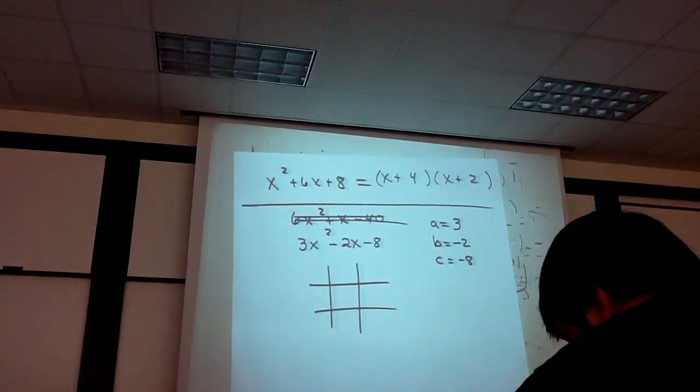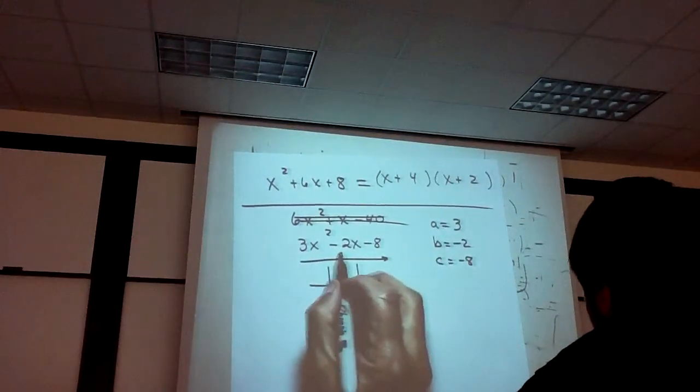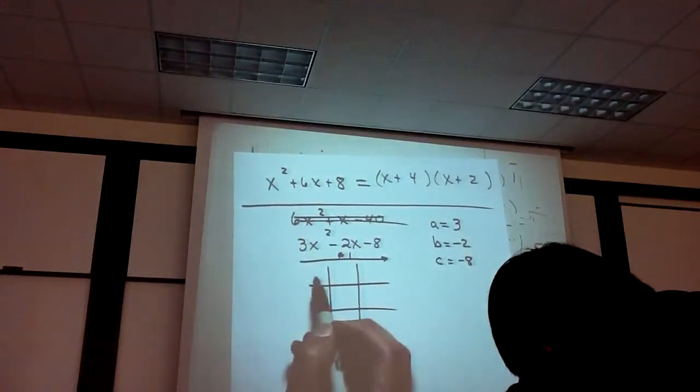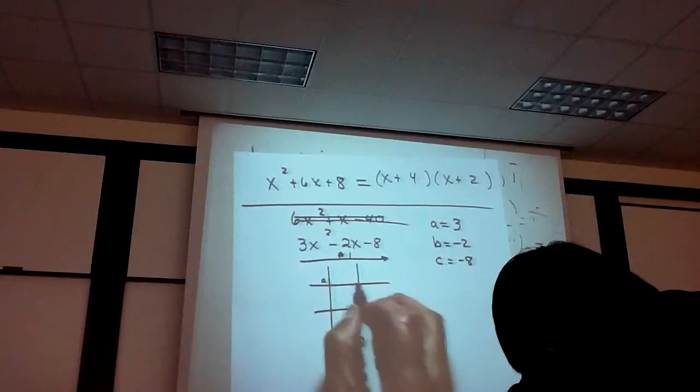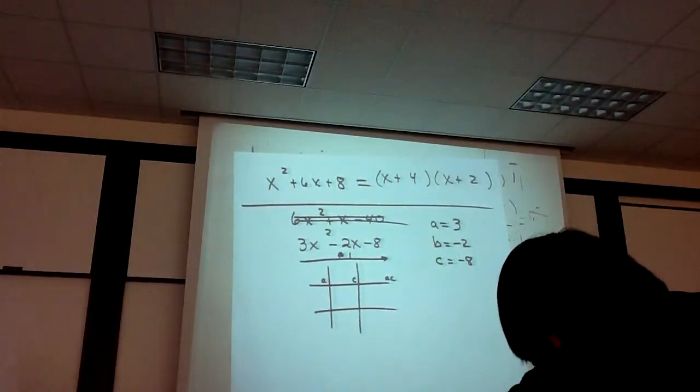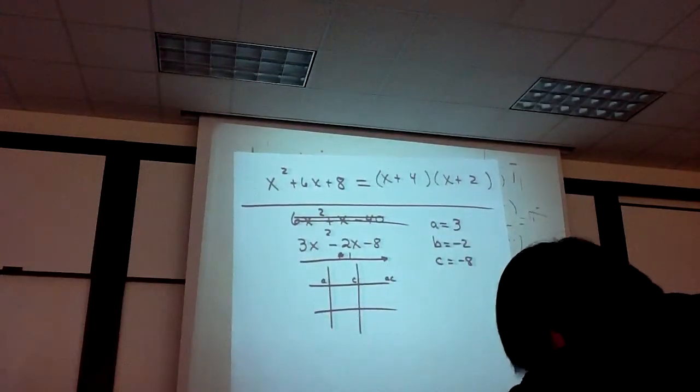Step number one takes care of the top row. Step number one labels these a, c, and ac. So you just fill in a, c, and then you multiply the two, and you get ac.